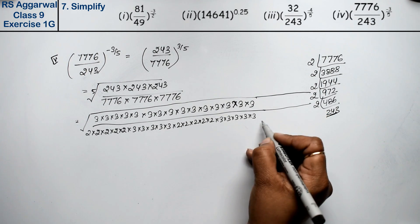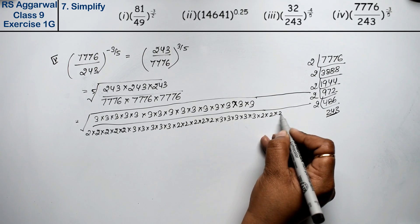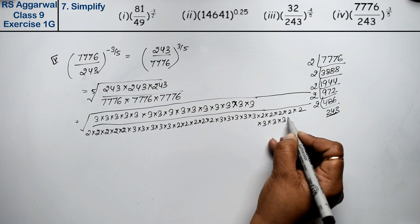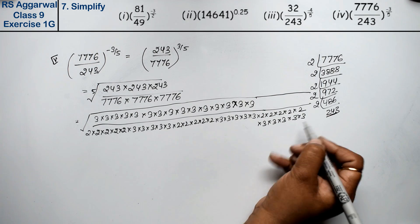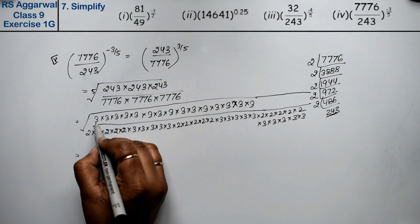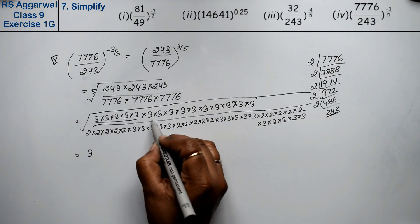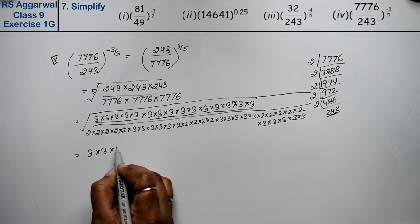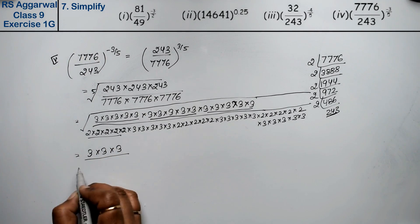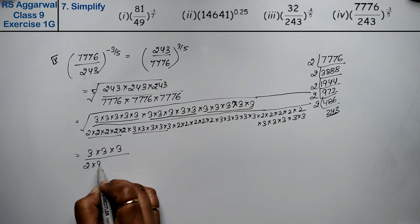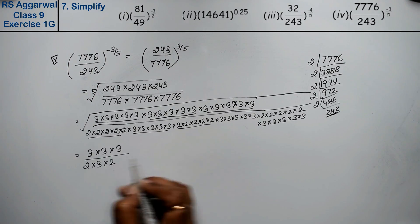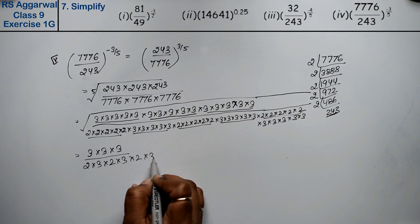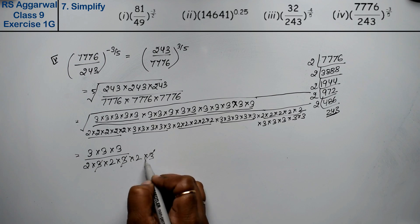Extending the factorization: 7776 = 2^5 × 3. Making 5-5 pairs, we get pairs of 3 and pairs of 2. This gives us 3 and 5 pairs, 3 and 5 pairs, repeated. Ultimately the numerator gives 3 threes and the denominator gives powers of 2 and 3.